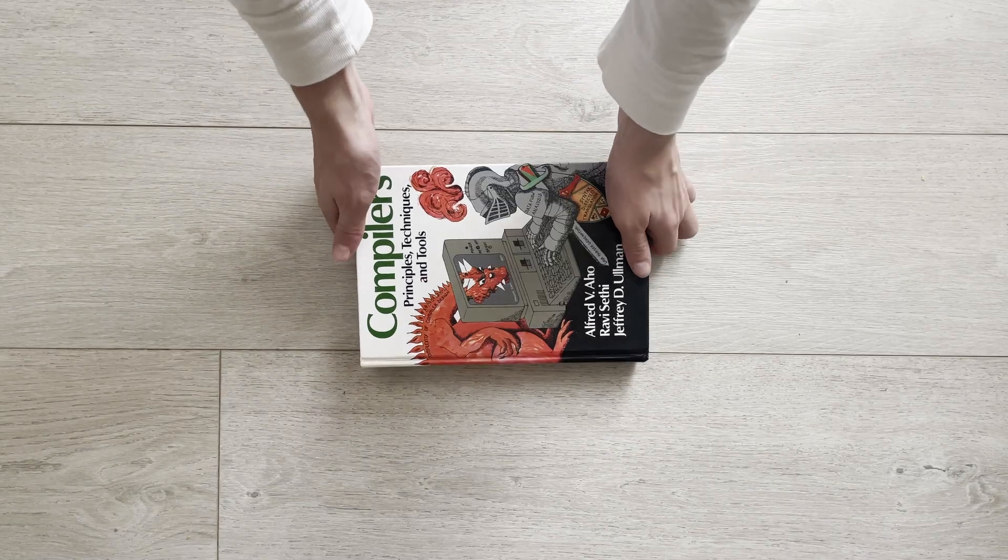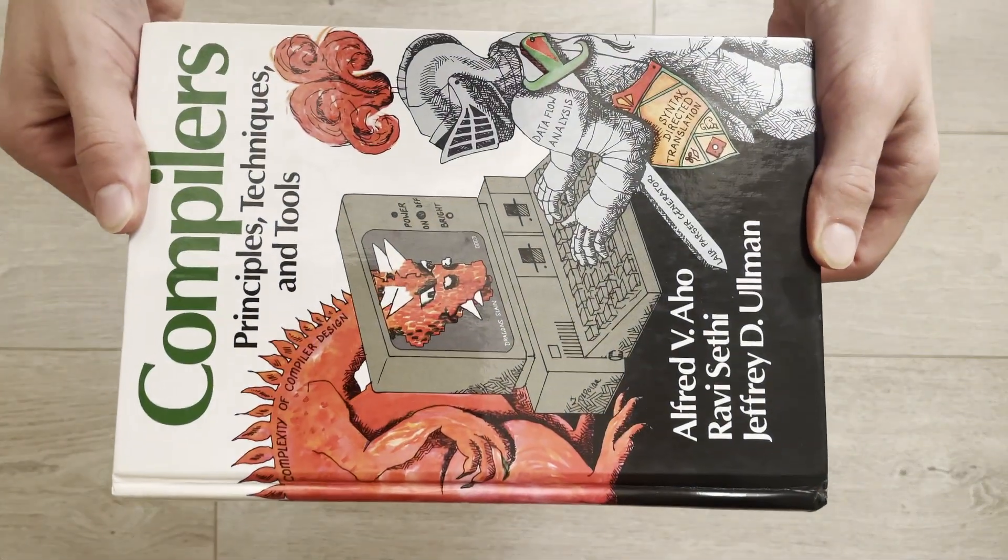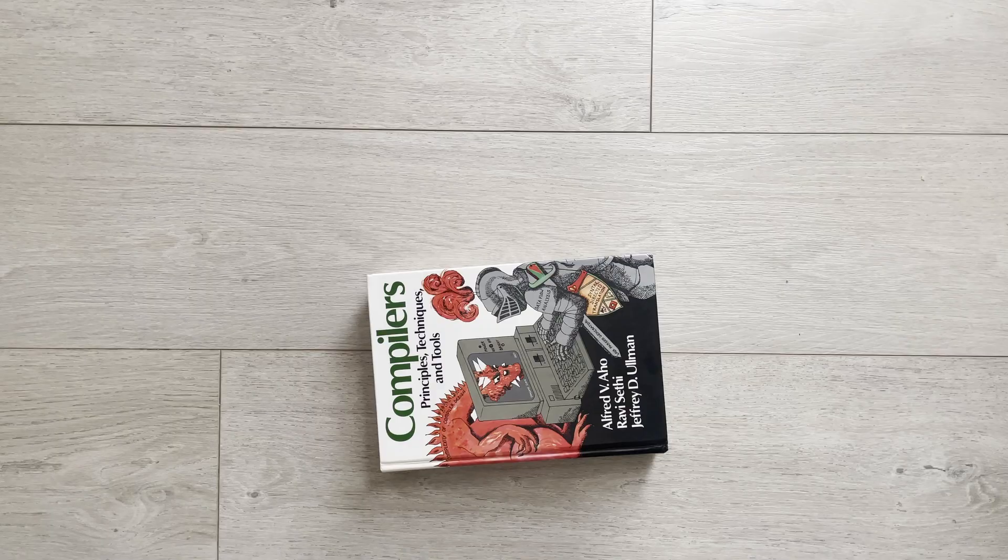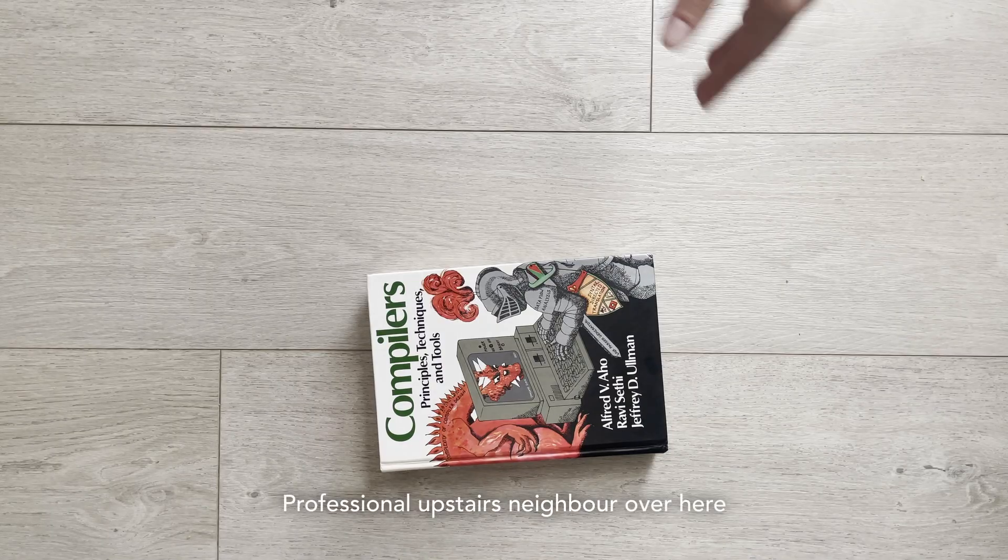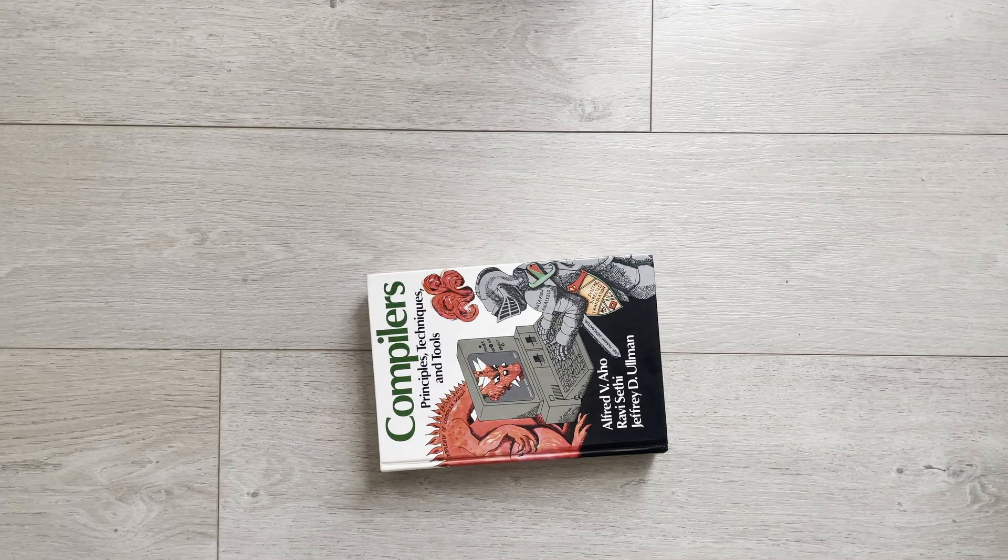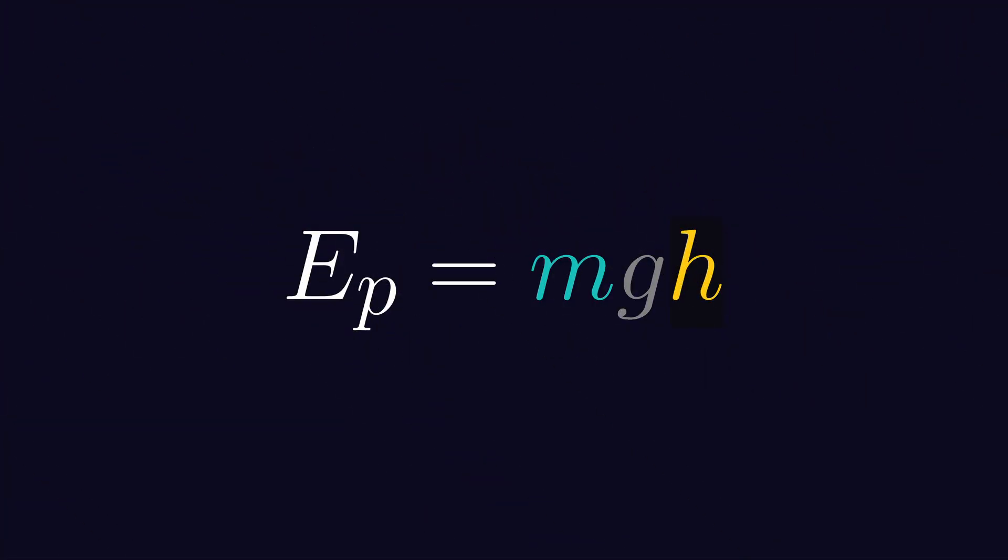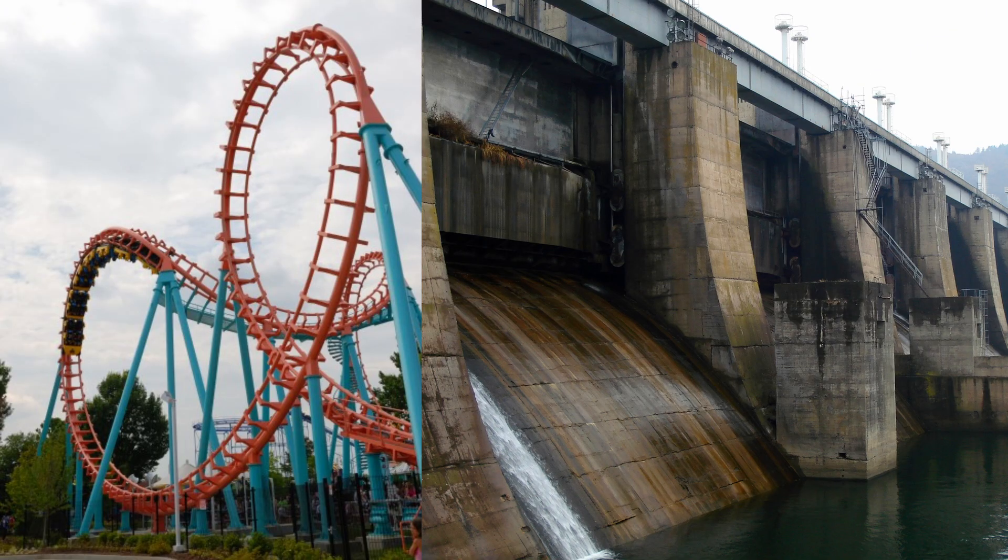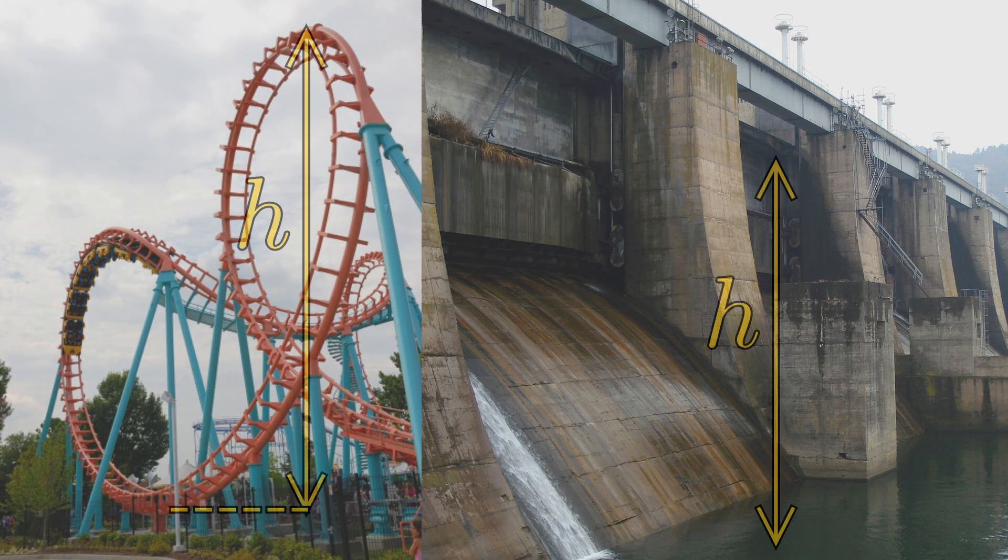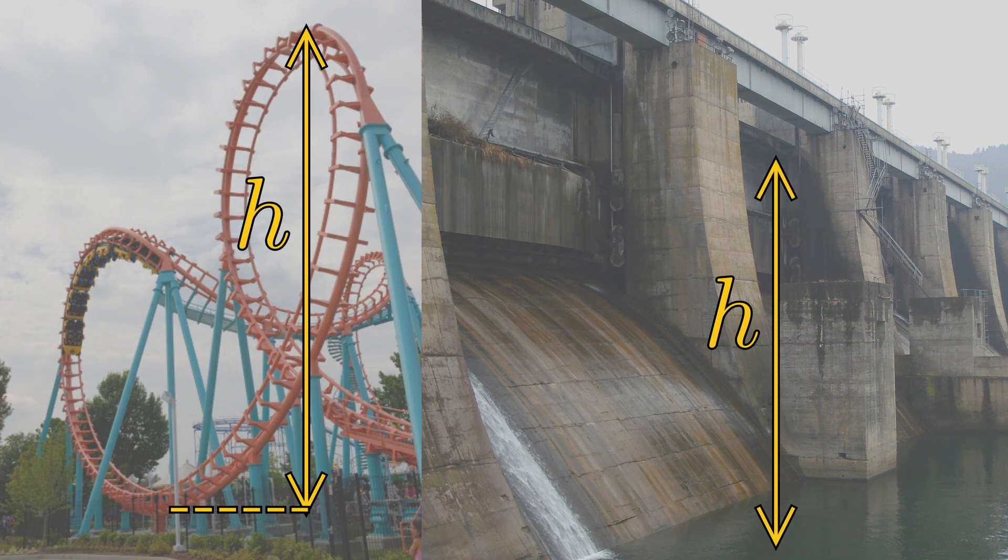Objects that aren't moving can still have energy. An object held at a height will, once dropped, gain kinetic energy as it falls back to the ground. The act of lifting the object stores future kinetic energy inside of it. Energy captured by working against Earth's gravity is called gravitational potential energy, and is given by the product of the object's mass, its distance from the ground, and the Earth's gravitational acceleration. Roller coasters and hydroelectric dams exploit the dance between kinetic and potential energy for fun and for profit.